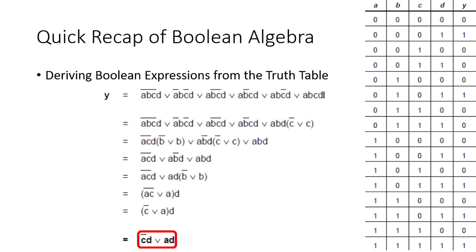Now, to implement this Boolean expression, it's quite simple and straightforward in practice. This is one method through which you can derive the simplified Boolean expression from the truth table for any situation.